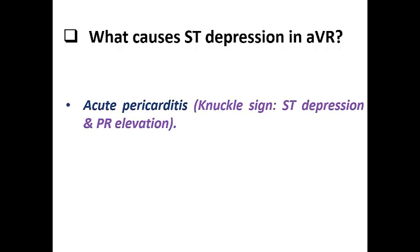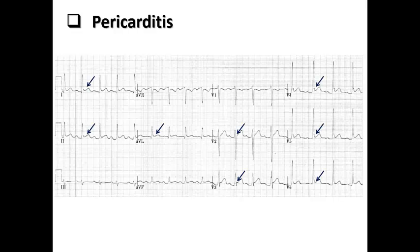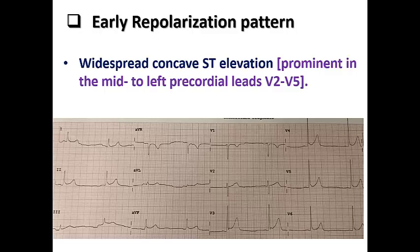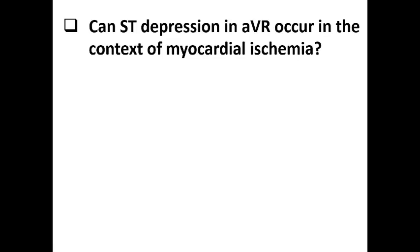Now we speak about ST depression in AVR. The most well-known cause is the knuckle sign in acute pericarditis, in which AVR shows ST depression and PR segment elevation — opposite to other leads which show ST elevation and PR segment depression. In early repolarization pattern, ST depression may also occur in AVR opposite to ST elevation in other leads. In a pericarditis ECG example, we see diffuse ST elevation in most leads, ST depression in AVR, and reciprocal PR segment changes. In early repolarization, we see widespread concave ST elevation most prominent in V2 to V5, together with ST depression in AVR.